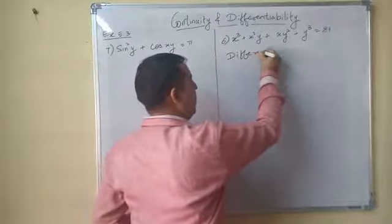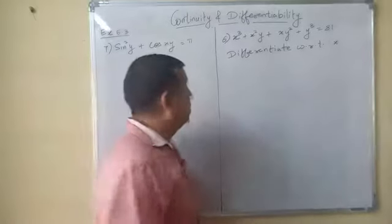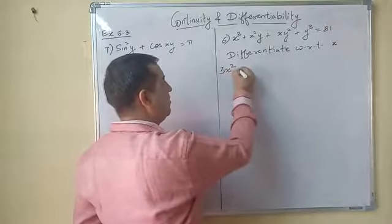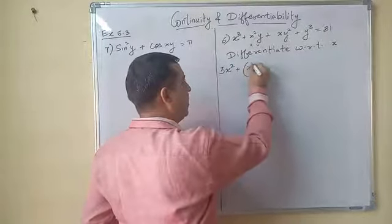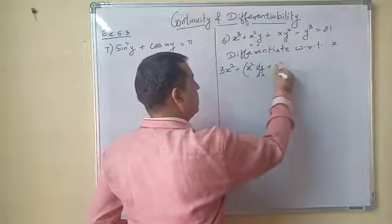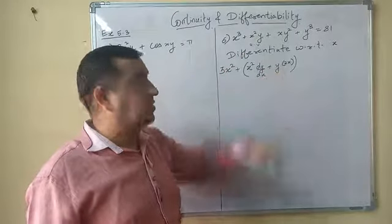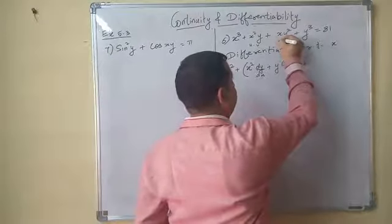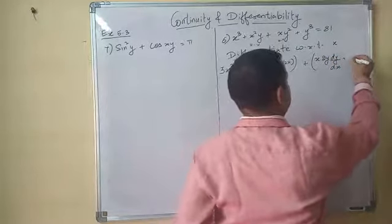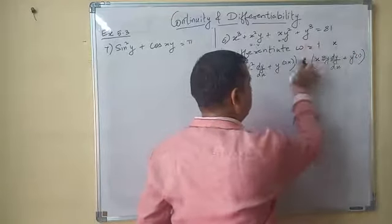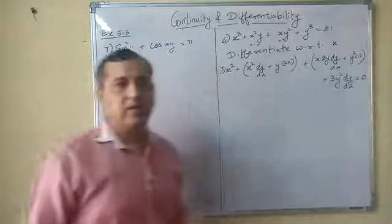Differentiating with respect to x: the derivative of x³ gives 3x². For the second term x²y, we apply the u·v (product rule): x² as is times dy/dx, plus y times 2x. Similarly for xy²: x times 2y·dy/dx, plus y² times 1. And the derivative of y³ gives 3y²·dy/dx. The derivative of 81 (a constant) is 0.